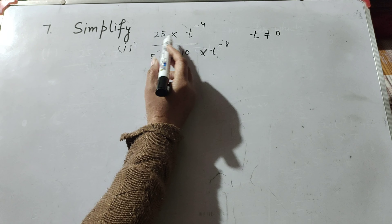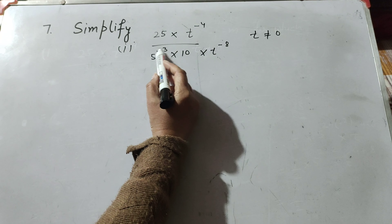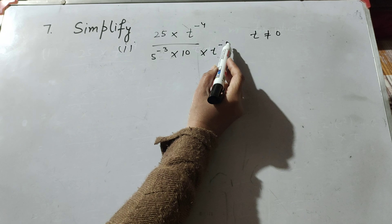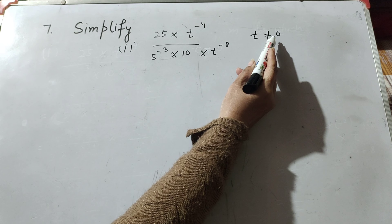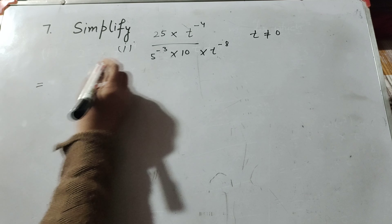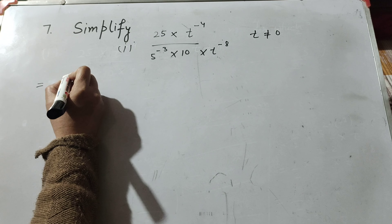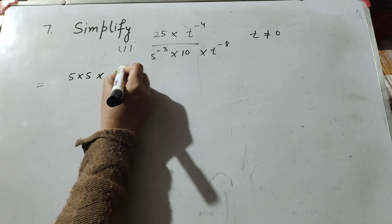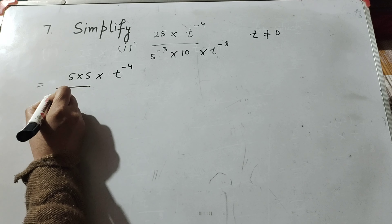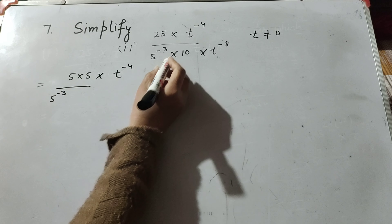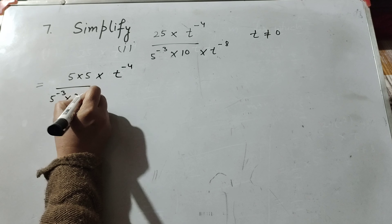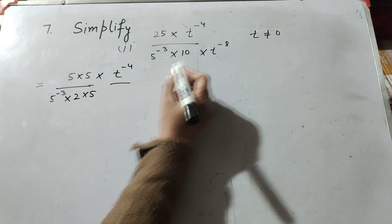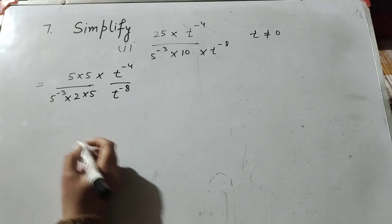First part: 25 into t raised to power minus 4, over 5 raised to power minus 3 multiply 10 multiply t raised to power minus 8, and t is not equal to 0. So we solve it. We write 25 as 5 multiplied by 5, into t raised to power minus 4, over 5 raised to power minus 3 into 10. Then we write 10 as 2 multiplied by 5, t raised to power minus 8 over t raised to power minus 8.